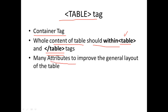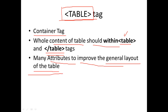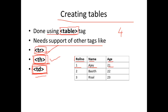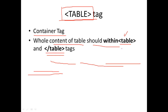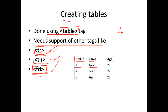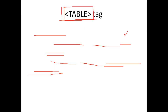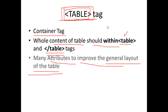Table tag has many attributes to improve the general layout of the table. Table tag is the main layout of the table. TR tag, TH tag, and TD tag are the child tags, but the table tag is the main layout.